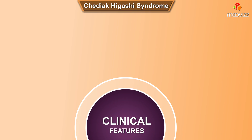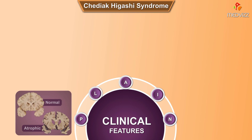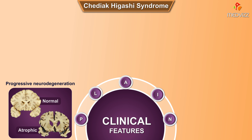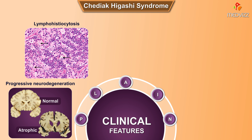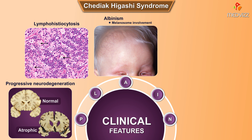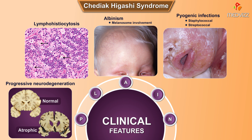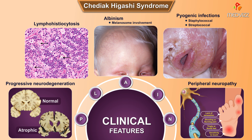Clinical features of Chediak-Higashi syndrome can be remembered by the mnemonic PLAIN, where P stands for progressive neurodegeneration, L for lymphohistiocytosis, A for albinism resulting from involvement of melanosomes, I for infections which are recurrent pyogenic infections especially by staphylococci and streptococci, and N stands for neuropathy — peripheral neuropathy caused by involvement of Schwann cells.